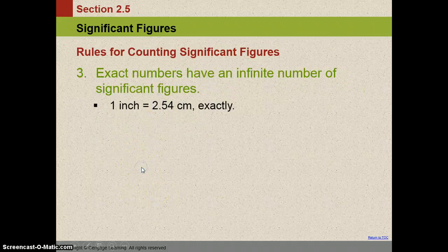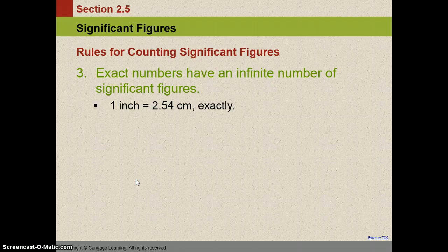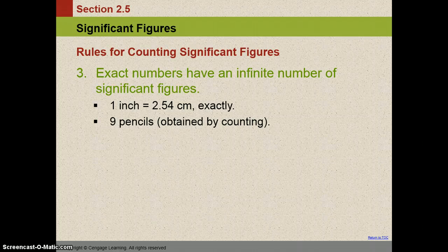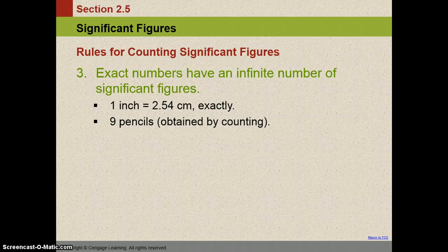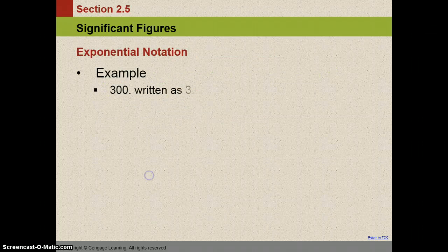Exact numbers have an infinite number of sig figs. Anytime that we use a conversion factor, it has an infinite number because we're saying that one inch is 2.54 centimeters exactly. Another example is a counting number. So anytime you count numbers, count pencils, count people, whatever it is, they're always significant. Every one of them are significant. So we say it's infinite because it wouldn't matter how many places past the decimal point that I would go to, I would only have just the nine pencils.